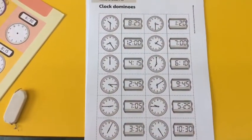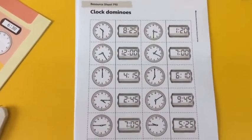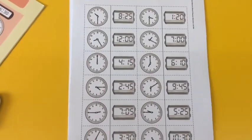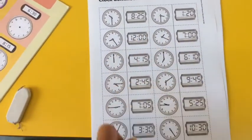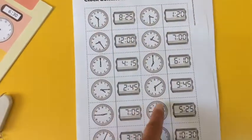And this, you should also find this in your pack. And you can play dominoes with a grown-up or a big brother or sister. Cut out each domino. Cut along the dotted lines. Don't cut along the solid lines. And you should be able to match up the digital times with the analogue times.